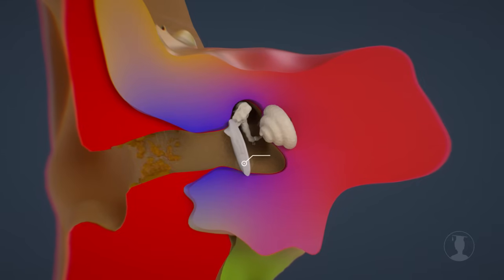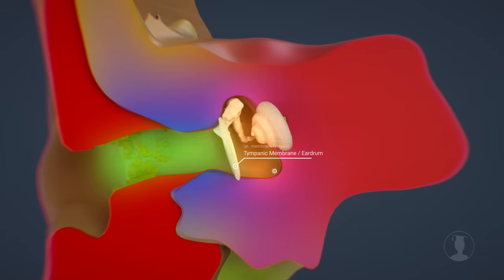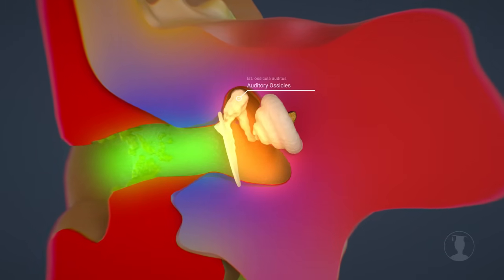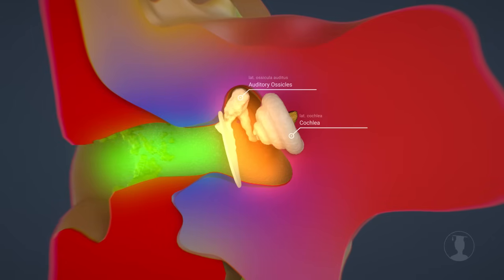The eardrum forms the boundary between the external auditory canal and the middle ear, in which the auditory ossicles are located. We also recognize the cochlea, which is part of the inner ear.